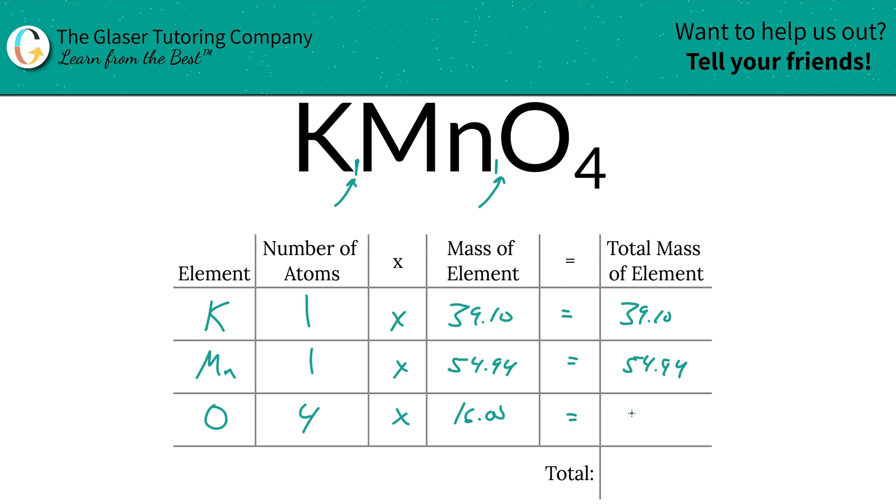And then the total mass of oxygen is going to be, well not 16 because you got to multiply by four. Careful there, 64, right? And then to find the total mass of the entire compound, just simply add this column up and that works out to be 158.04.